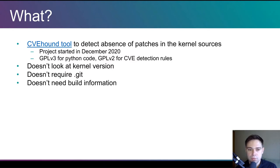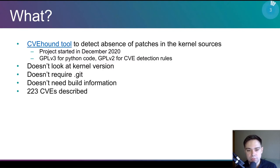I started this project about 10 months ago. The tool works as a static analyzer to detect missing CVE fixes. It doesn't use kernel version, doesn't require a development log, and doesn't need to know how to build your kernel. But internally, the tool contains a special rule for each CVE it is able to check for. As for now, I have described more than 200 kernel CVEs — the main value of the tool lies in these descriptions, and I will talk about them in detail a bit later.